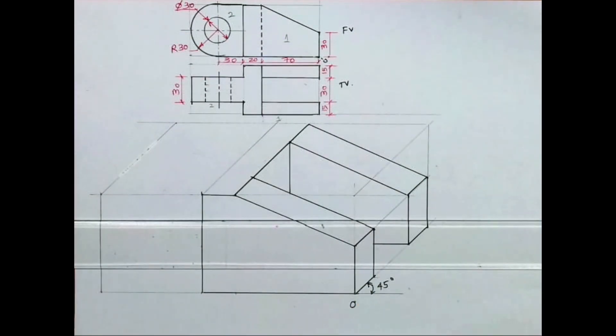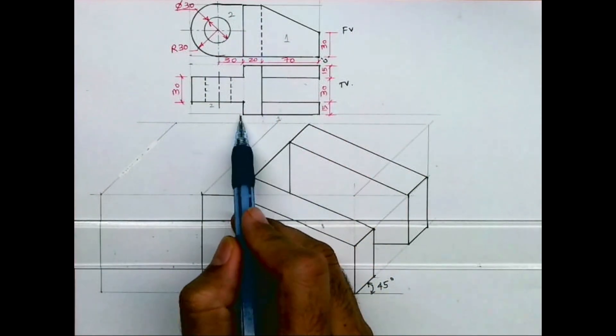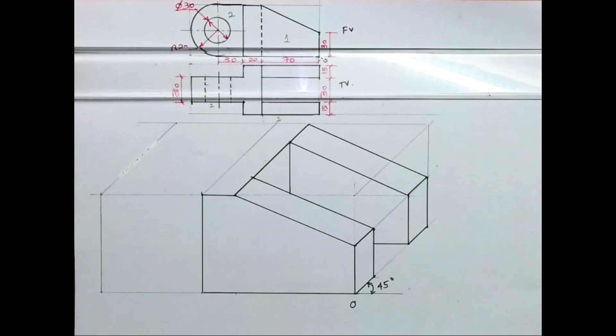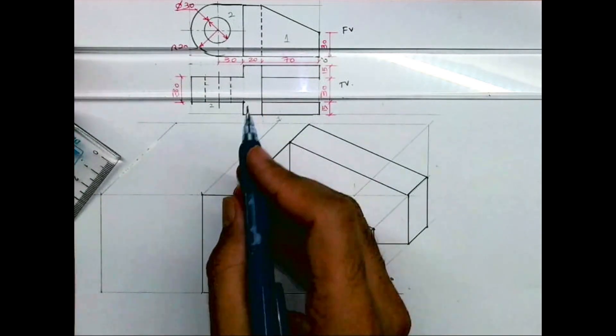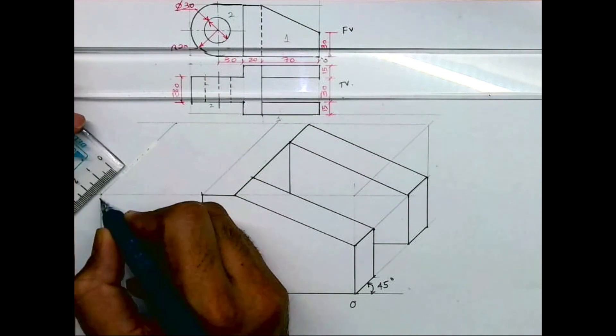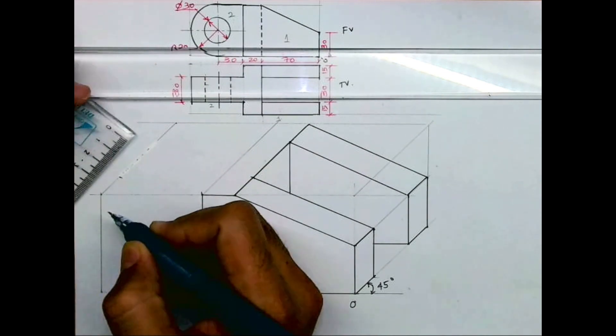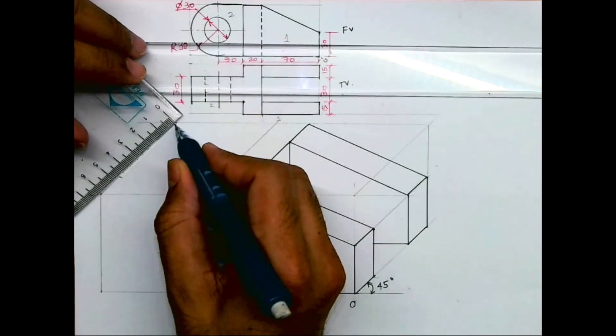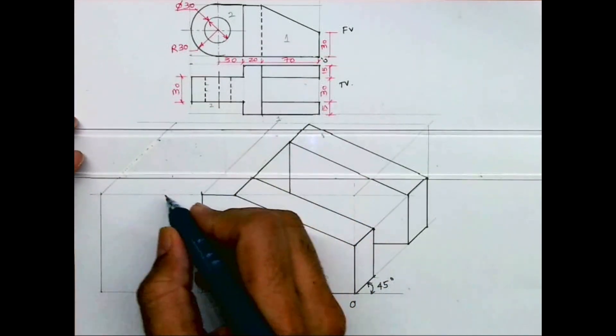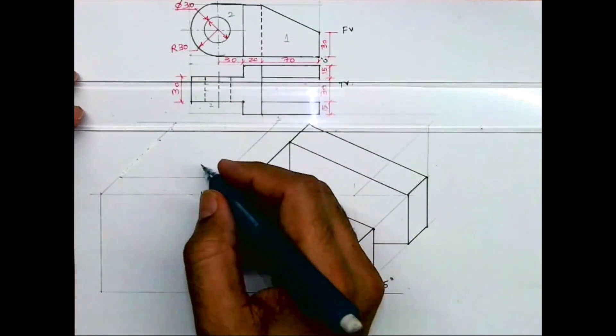Now for part two, if you see, part two is how much behind? 15 behind. So you go 15 behind. So from here you take 15, and from here also you take 15.